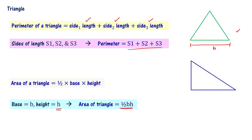You have to take this base and draw a perpendicular from the base such that the perpendicular touches the opposite vertex. Then you draw a line like this — this is a perpendicular line. The height goes from the base; that line is perpendicular to the base. Let me call this as H. Area of the triangle is half BH.